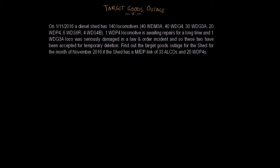Let us have one column for ALCO locomotives and one column for HHP locomotives, followed by a column for the total. First of all let us write down the total holding. We have 40 WDM3A, 30 WDG3A, 6 WDS6R, and 4 WDS4B locomotives — writing all under the head of ALCO, we have a total of 80 locomotives. Similarly we have 60 HHP locomotives, bringing the total holding to 140.